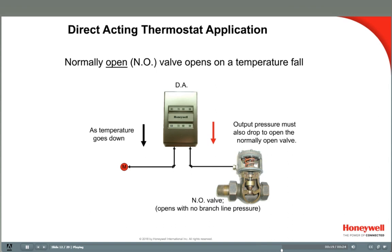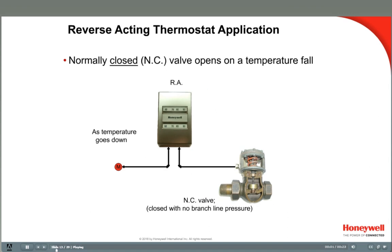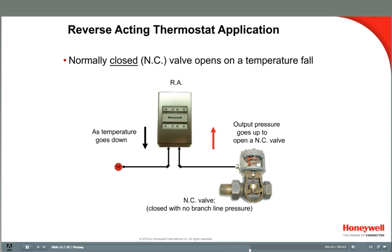So as the room temperature falls, the branch line pressure must also fall to open the normally open valve. For the same heating loop but with a normally closed valve, as the temperature falls we need to add heat, so the valve needs to open. A normally closed valve needs air pressure to open, so as the temperature falls, the output branch line pressure must rise to open the valve. Thus, a reverse acting thermostat is needed.